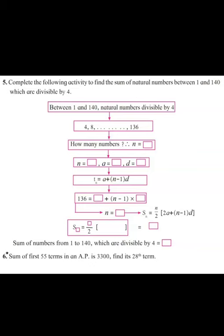Now we have to find the sum of all these numbers. For finding the sum, first we have to find how many such numbers are there — natural numbers between 1 and 140 which are divisible by 4. That means we have to find the value of n first. For that we will use the formula: tn = a + (n - 1) × d. Here, a = 4 (the first term) and the common difference d = 4.